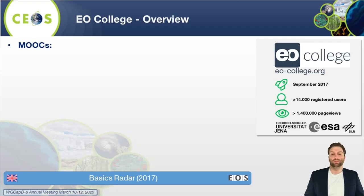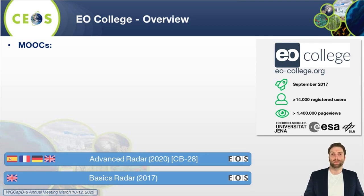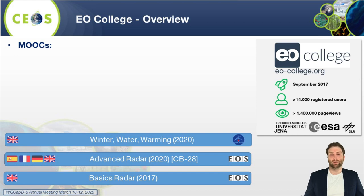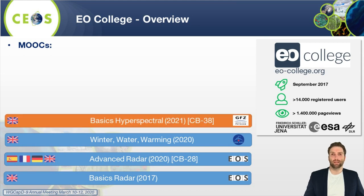In 2017 we published a basic course on radar remote sensing called Echos in Space, and within the next months of this year we will also publish another massive open online course on more advanced understanding of the radar backscatter problematic. In collaboration with the Canadian Space Agency we will produce another mini MOOC on applied radar remote sensing, and on top of that we also produce courses in other domains such as hyperspectral remote sensing in collaboration with colleagues from the Geo Research Center in Potsdam.